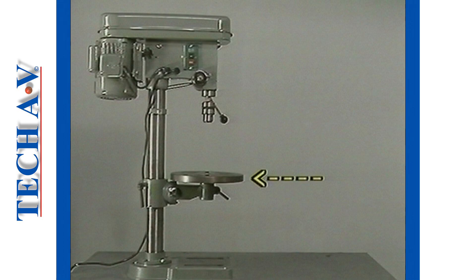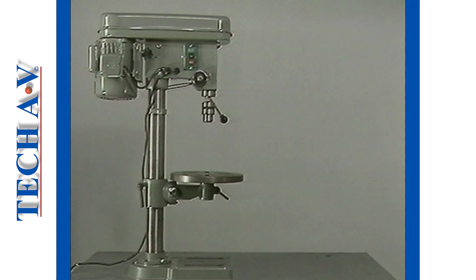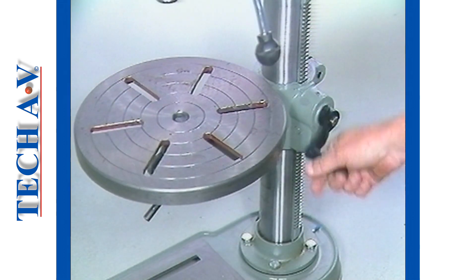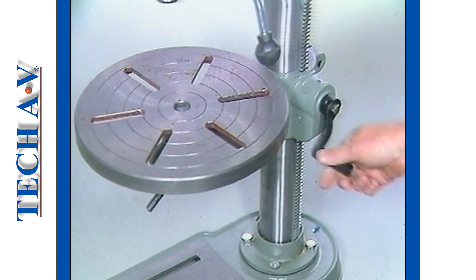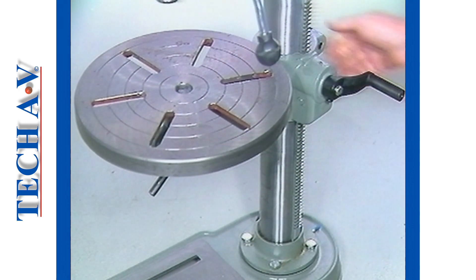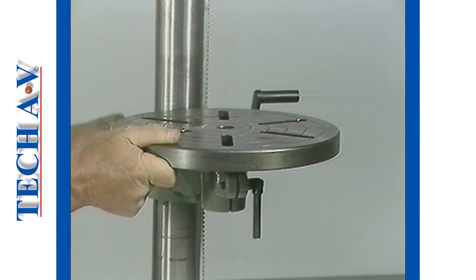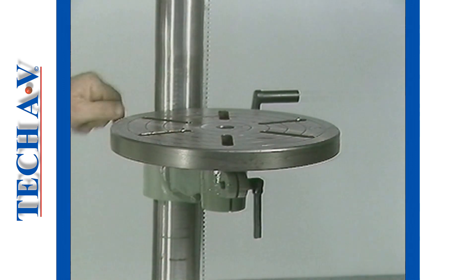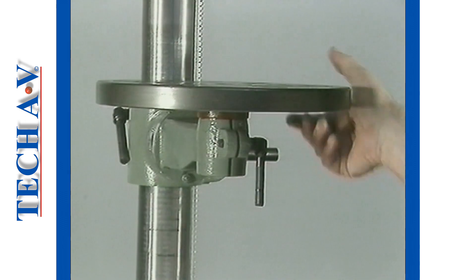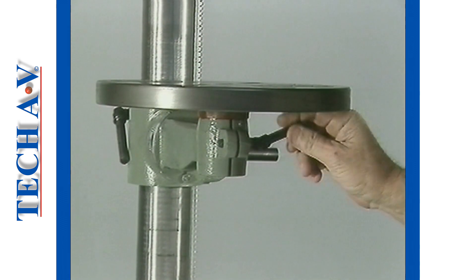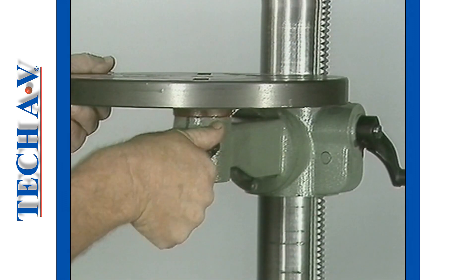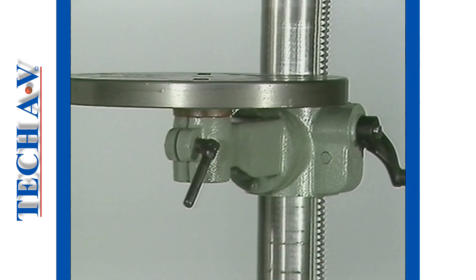Work is supported on the work table. This, in turn, is attached to the column and can be lowered or raised beneath the spindle. The work table can also be swung from side to side and rotated. All movable points are secured firmly during the drilling procedure with clamping levers.